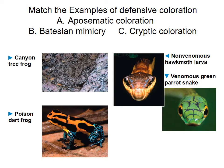Matching examples: the canyon tree frog is barely visible — that's cryptic coloration. The poison dart frog is very visible — that's aposematic or warning coloration. The last two pictures show a non-venomous hawk moth larvae and a venomous green parrot snake — they don't look exactly the same, but the resemblance is enough to deter predators. That is Batesian mimicry.